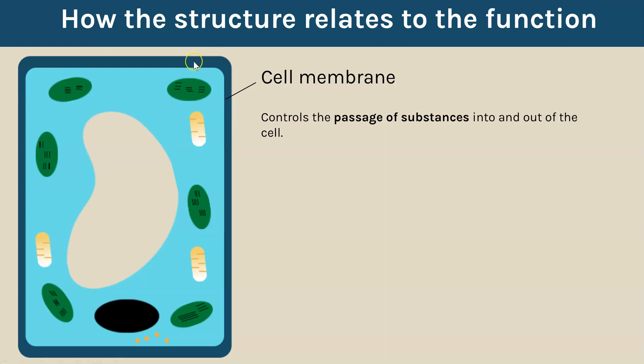The cell membrane, this is the layer surrounding the cells that you have in both an animal cell and a plant cell and that layer controls what can enter and exit the cell. So that's what we mean by it's controlling the passage of substances.